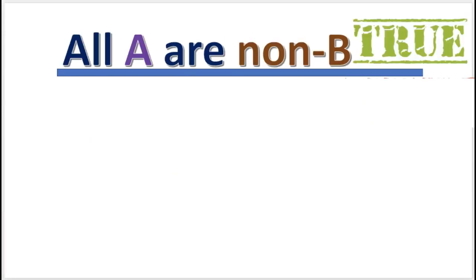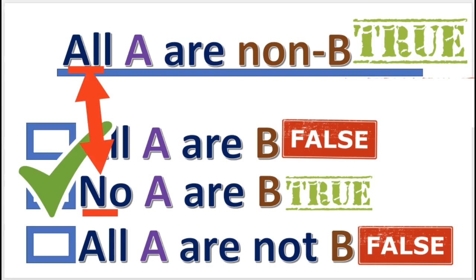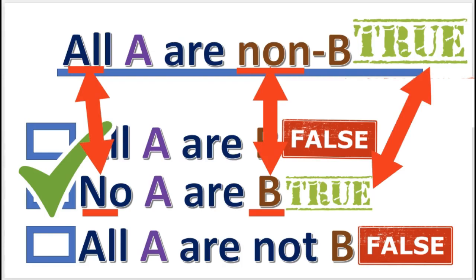Next practice problem: if this proposition is true, what is the obverse and its truth value? The quality has been changed, and the predicate has been replaced with its complement. The truth value remains the same.